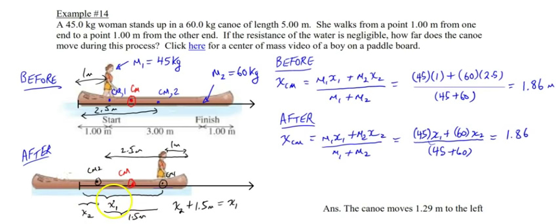So if we take x1 minus x2, we get 1.5, or if you take x2 plus 1.5, you get x1. Why am I doing that? Because I'm trying to find out how far the canoe shifted to the left. That's the whole question it's asking. How far did the canoe shift to the left? So I really want to know what x2 final is. What's the new x2? So I'm going to replace x1 with that.